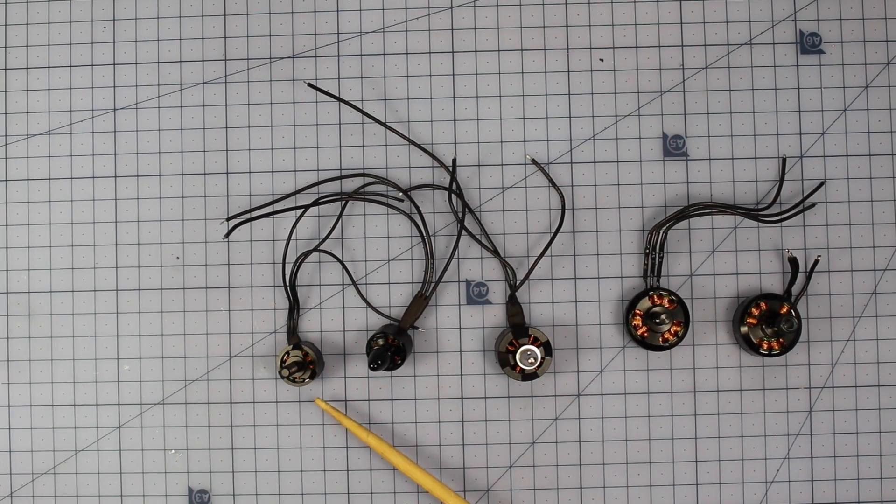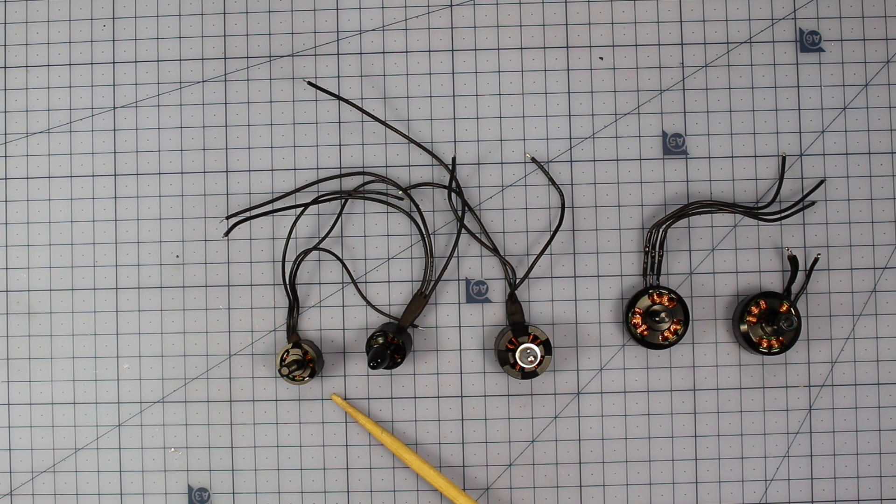And the smallest motor up here, this 1306, has a KV of 4000. The reason these small ones spin faster is because it's a lot easier to spin something small a lot quicker than it is some of these big heavier motors, at least without burning them out or wrecking the motor.